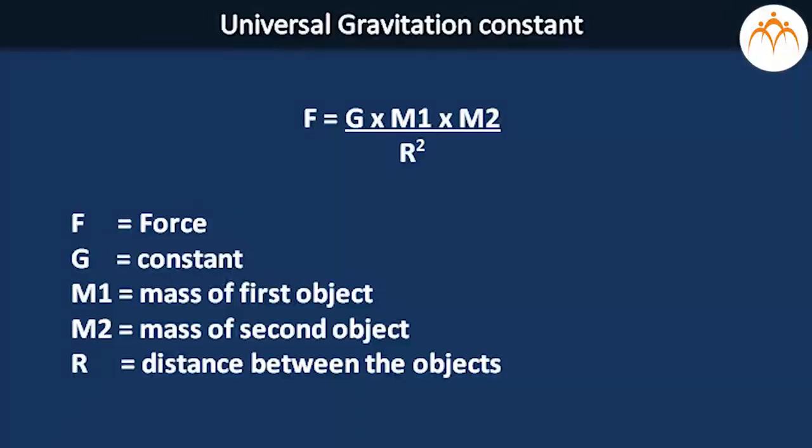If we want to write this as a formula, F will be equal to G into M1 into M2 upon R square, where F is the force, G is constant, M1 is the mass of the first object, M2 mass of the second object, R is the distance between the objects.